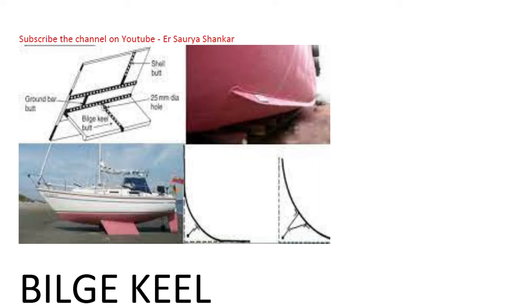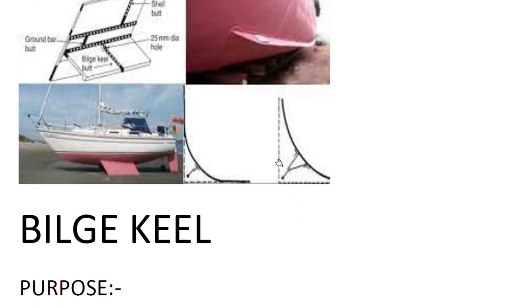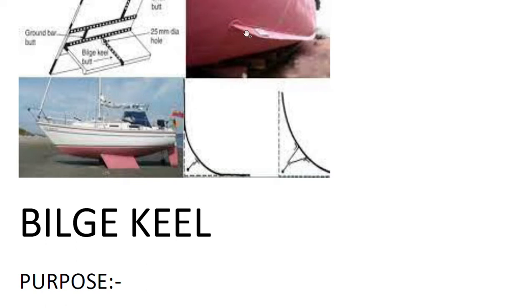You can see here this is the shape and this is the actual picture of the ship. You can see one ferry that is there outside the water and you can see this bilge keel. This is the protrusion that is outside the hull.